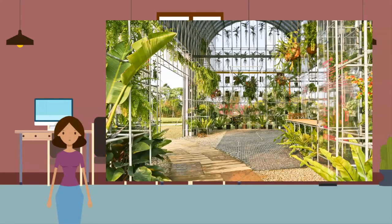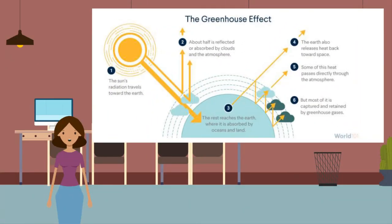The greenhouse effect is a natural process where greenhouse gases — namely carbon dioxide, methane, water vapor, and nitrous oxides — trap energy from the sun inside the earth's atmosphere, which heats the earth. This is similar to a greenhouse, where the sun shines through glass, heating the air inside, and the heat cannot escape. Similarly: 1. Solar radiation (shortwave) travels to earth and heats the surface. 2. The earth gives off heat (longwave radiation) when it cools. 3. Some of this heat leaves our atmosphere into space. 4. Some heat is trapped by greenhouse gases, keeping our earth warm.